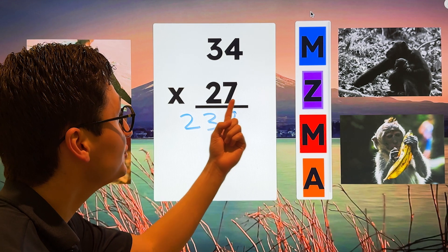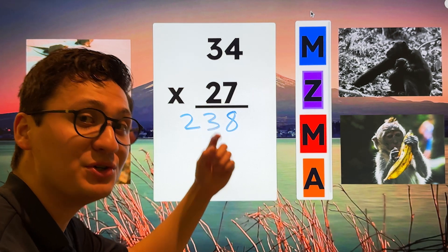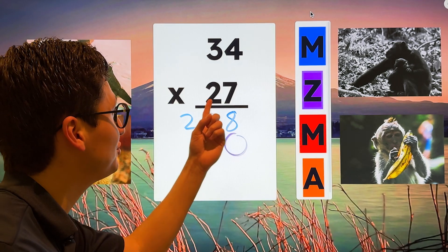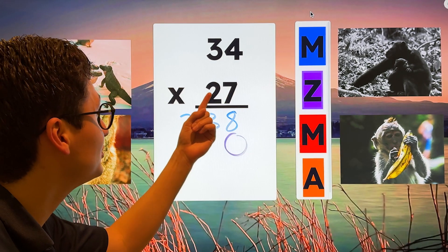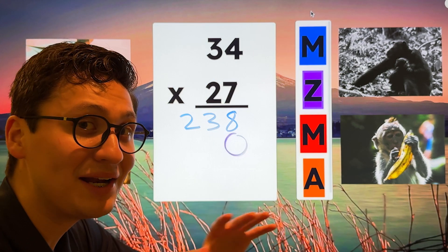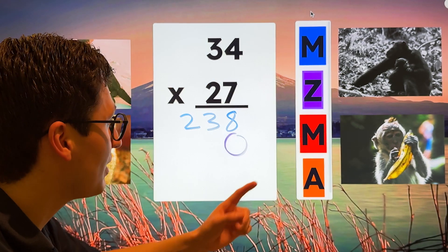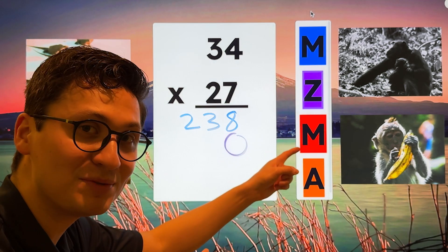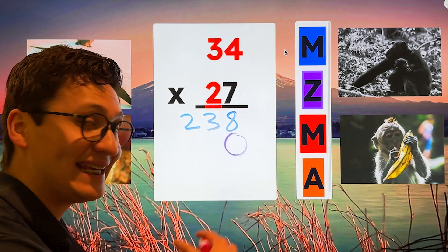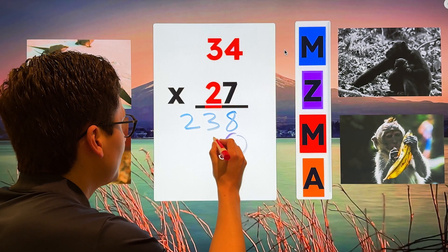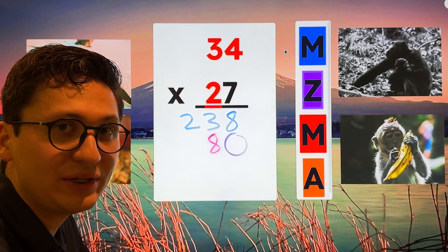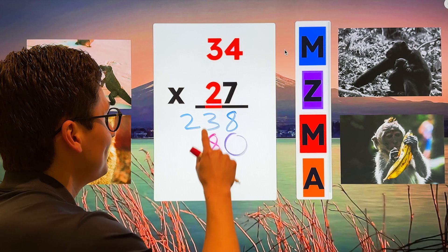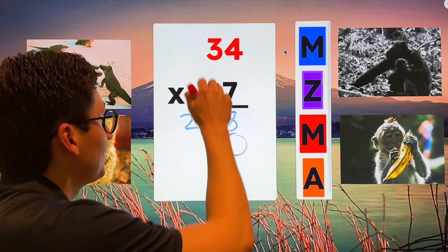The next step is zero. Remember, before you go on to your next place value, you have to put a zero. Because you're not really multiplying two times four, you're actually multiplying 20 times four. Now you don't see it while it's happening, but that's why we put a zero. So now that we put our zero, we can move on to our next step, which is to multiply. So two times four is eight. We don't have to regroup. We only regroup when the number is 10 or higher. But two times four is eight. Two times three is six.